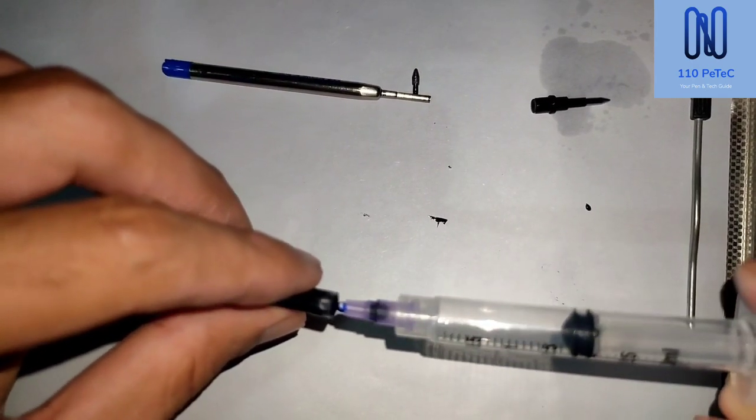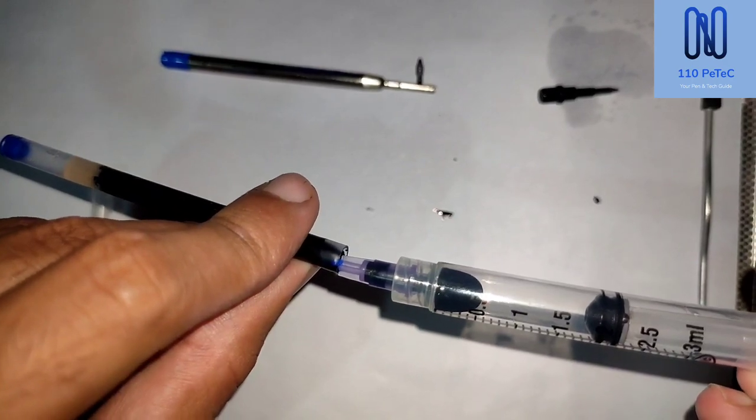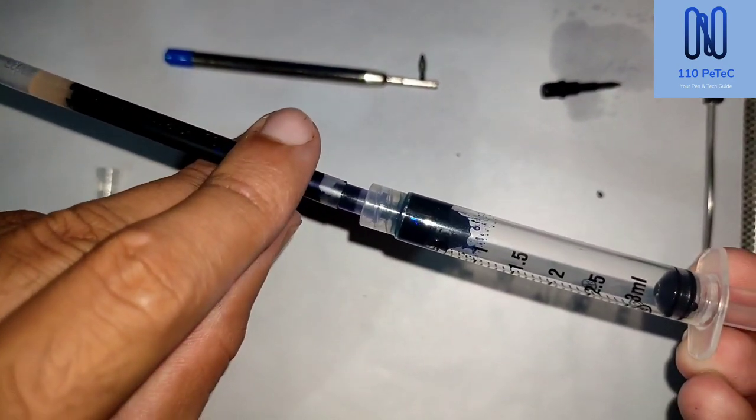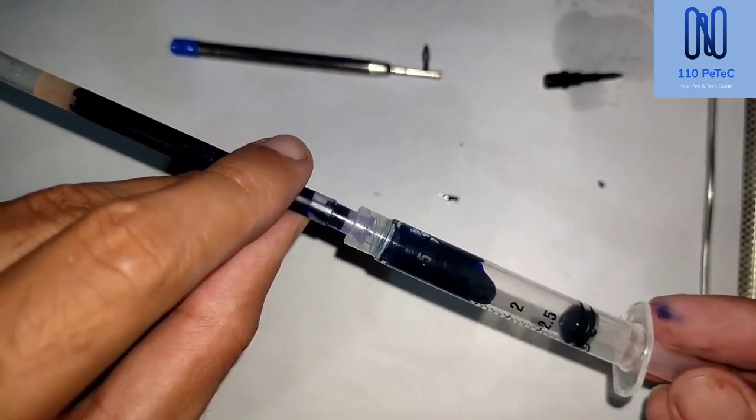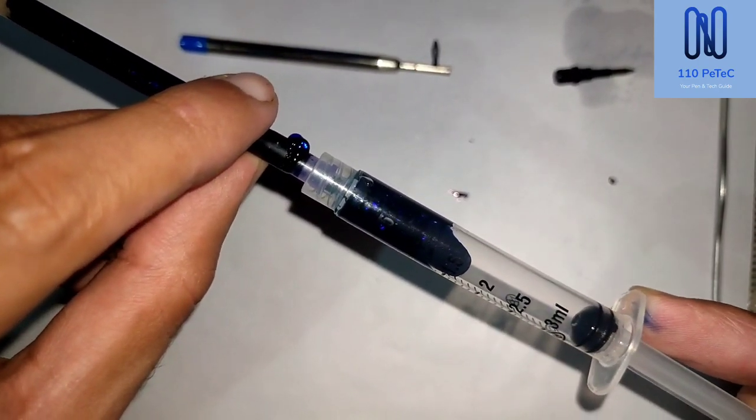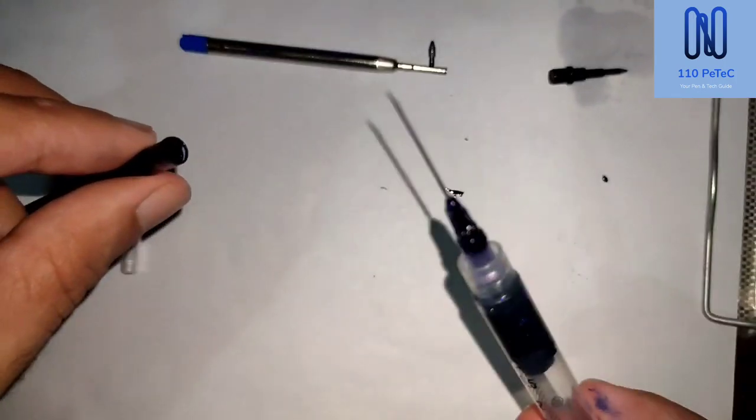This is a difficult task. Here you are seeing ink is coming out inside the syringe body. Really it's difficult to use. You have to make a vacuum, and gel ink is not like roller ball. Gel ink is much more viscous and it's really difficult to pour it inside a syringe.